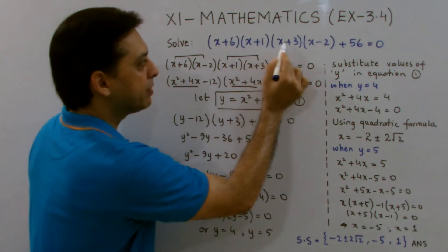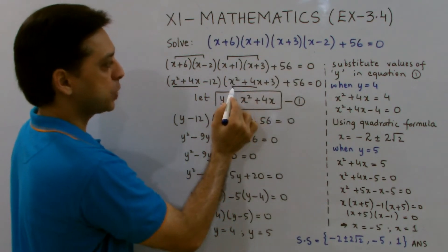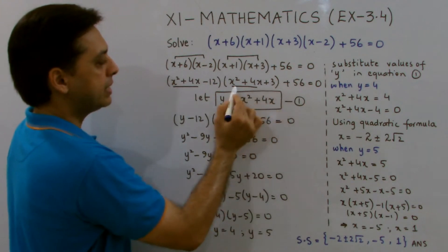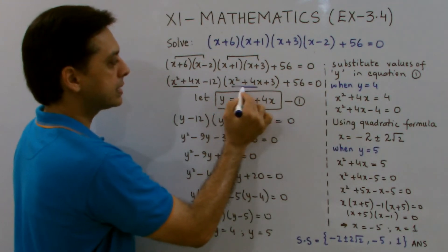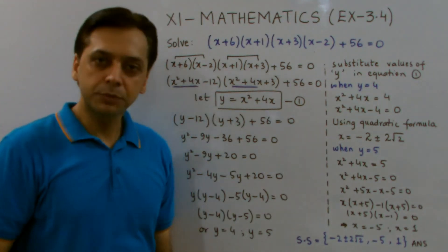Similarly, when I simplify x plus 1 and x plus 3 after rearranging, I get x squared plus 4x plus 3. Now, this x squared plus 4x is identical in both brackets, and this is how I can go for the substitution.